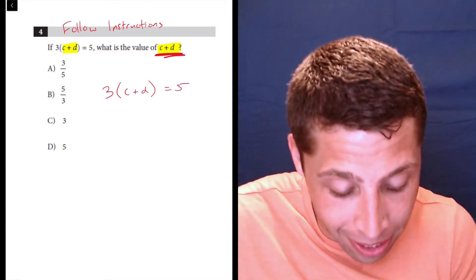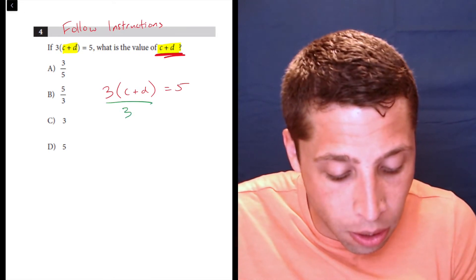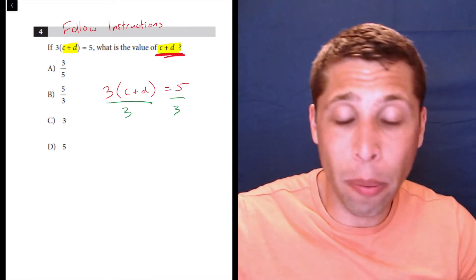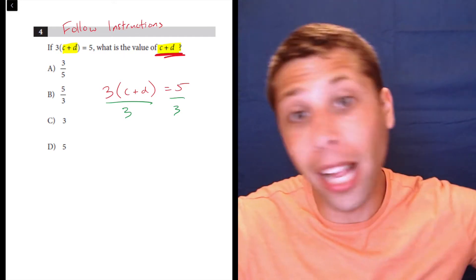Take your eyes off of the c and d, treat them as if they're one thing. How would we get rid of it? We'd want to isolate it the same way we'd want to isolate x. There's a three being multiplied in here. Don't multiply it in.